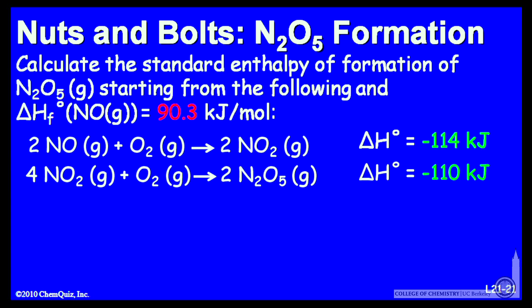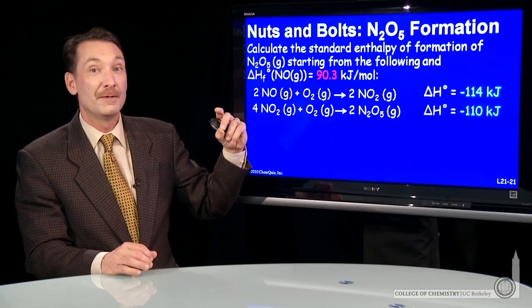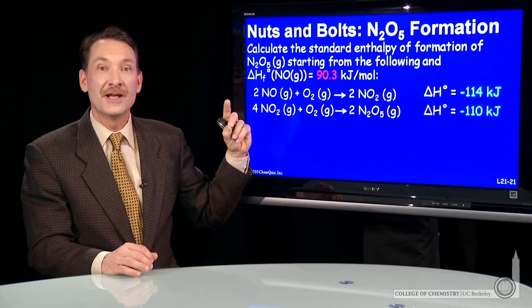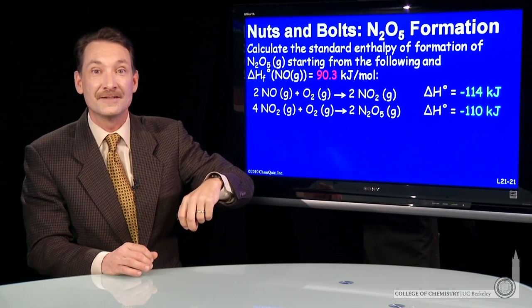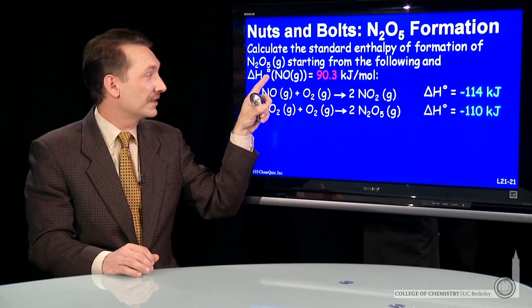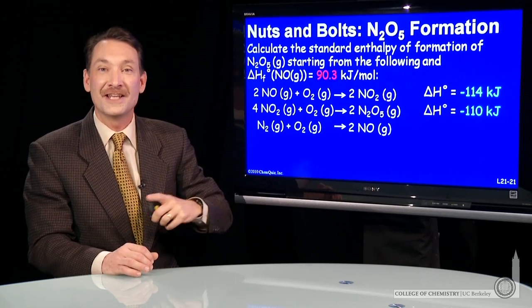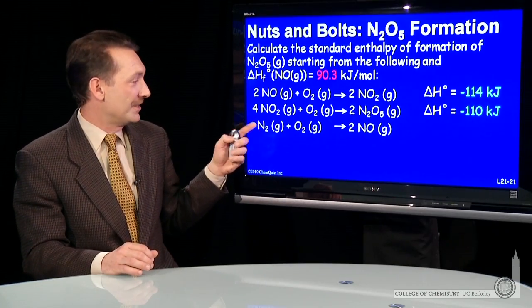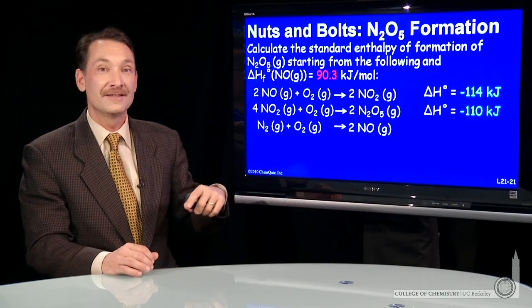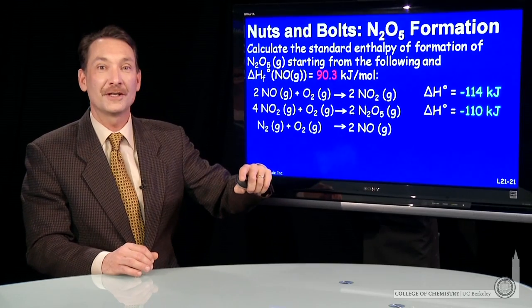Now, if I know the enthalpy of formation of NO gas, I can write that chemical reaction. Enthalpies of formation are the formation of the compound from the elements in their standard states. This compound contains nitrogen and oxygen. Nitrogen in its standard state is N2 gas, oxygen is O2 gas. So I can write N2 gas plus O2 gas goes to 2NO, balancing that chemical equation.